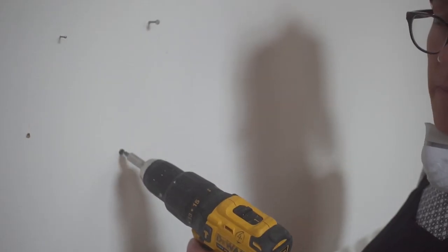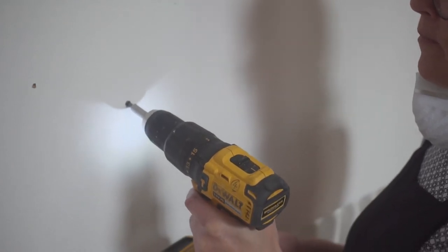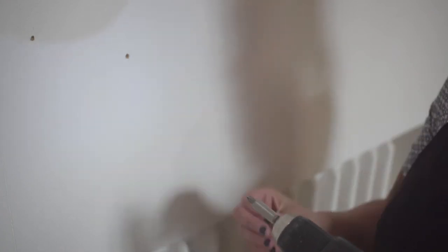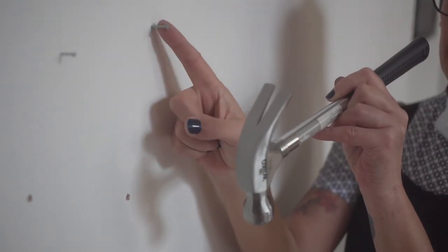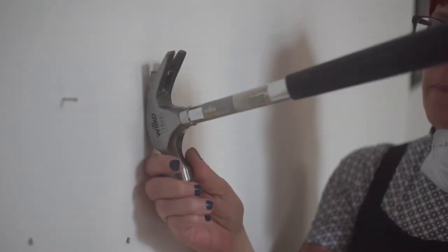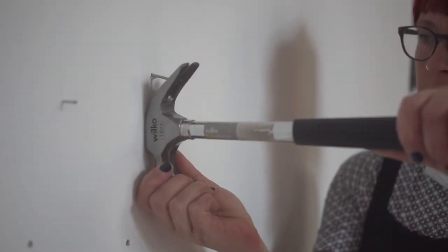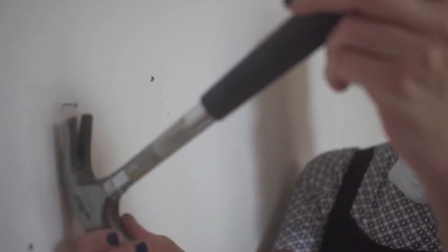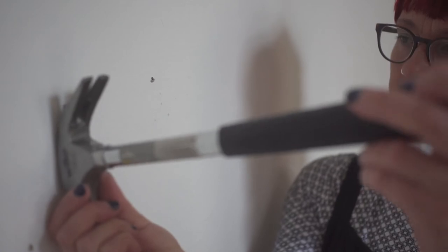Once these have been removed, place them somewhere safe. If you have nails in your wall, you will need to use the claw hammer. Slide the head of the nail into the groove, rest the head of the hammer against the wall, and use the handle to gently pull back. This will prise the nails out of the wall.